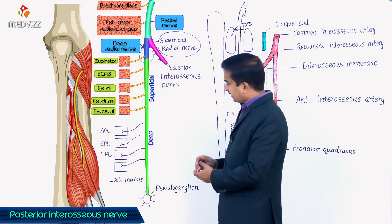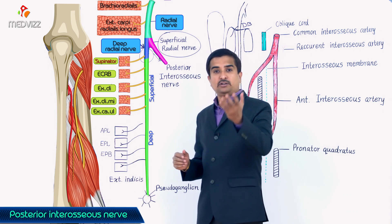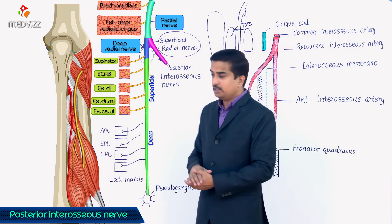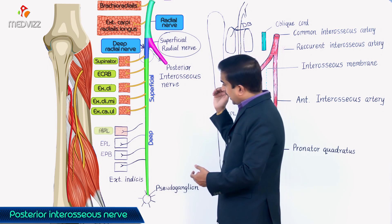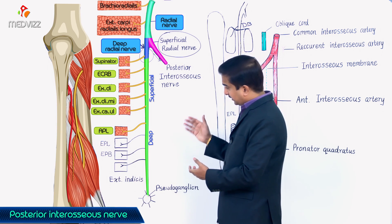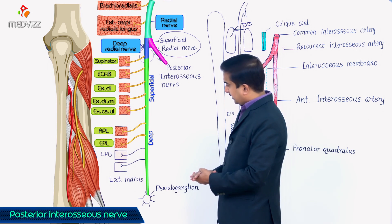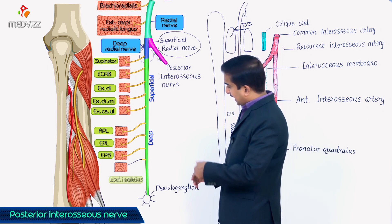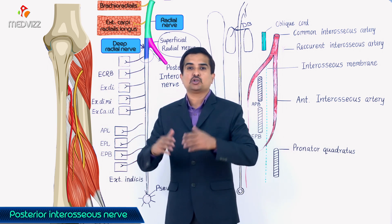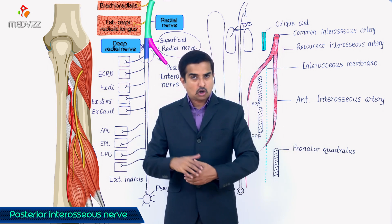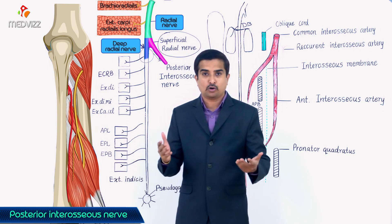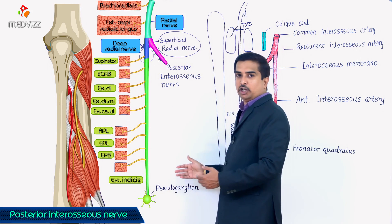Within the deep group, the supinator is not innervated by the posterior interosseous nerve but rather by the deep branch of the radial nerve. The remaining deep group muscles — abductor pollicis longus, extensor pollicis longus, extensor pollicis brevis, and extensor indicis — are all innervated by the posterior interosseous nerve. After innervating the superficial and deep extensor muscles, the nerve finally ends as a pseudo-ganglion.